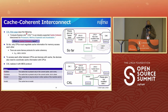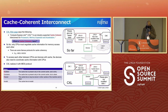CXL is described as an industry-supported cache-coherent interconnect for processors, memory expansion, and accelerators. What is cache coherency? So far, only CPUs negotiate cache information for memory access with each other, using protocols like MESI and MOESI. MESI stands for Modified, Exclusive, Shared, and Invalid. To access each other between CPUs and devices with cache, devices also need to coordinate cache information with CPUs. CXL realizes this with the MESI protocol.